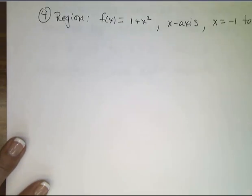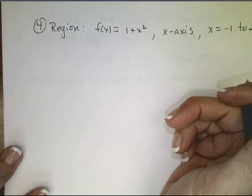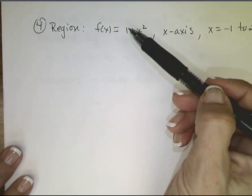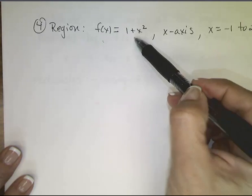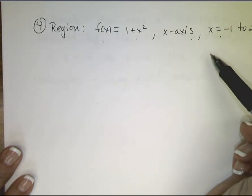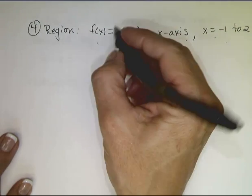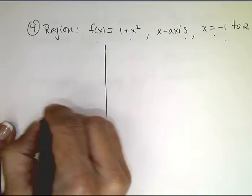All right. What if I then asked you to find the area of this region bounded by this curve, the x-axis, x equals negative 1 to 2? Again, we draw the figure, right?